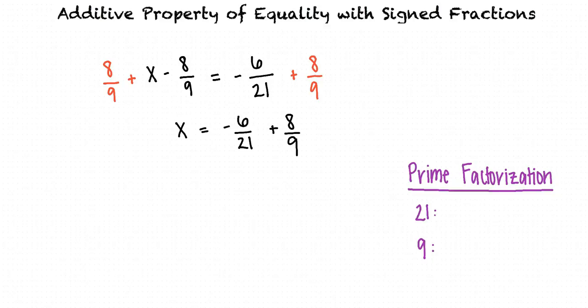The prime factorization of 21 is 7 times 3. And the prime factorization of 9 is 3 times 3. So our least common multiple should be 3 times 3 times 7, which is 63. That's right.